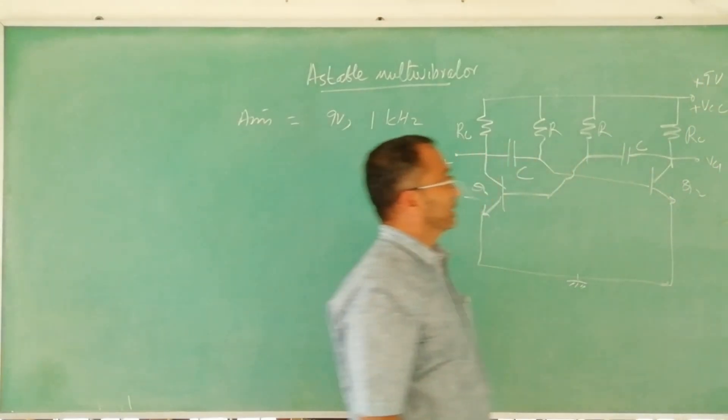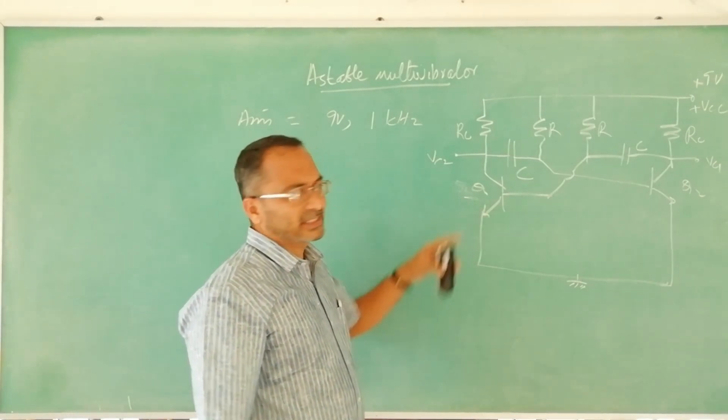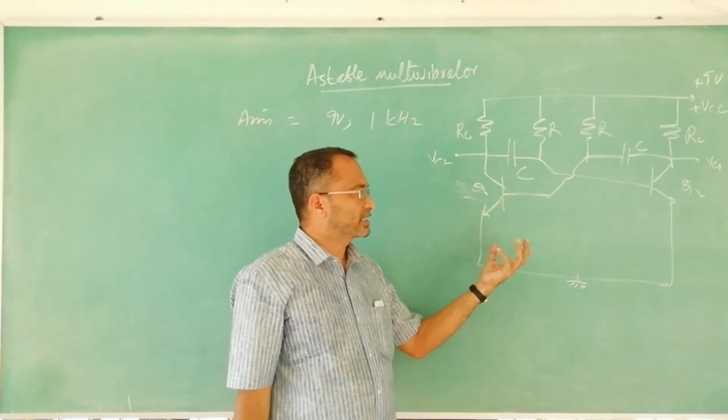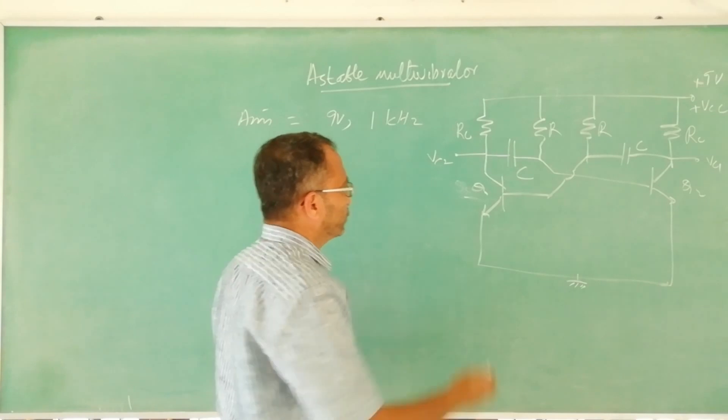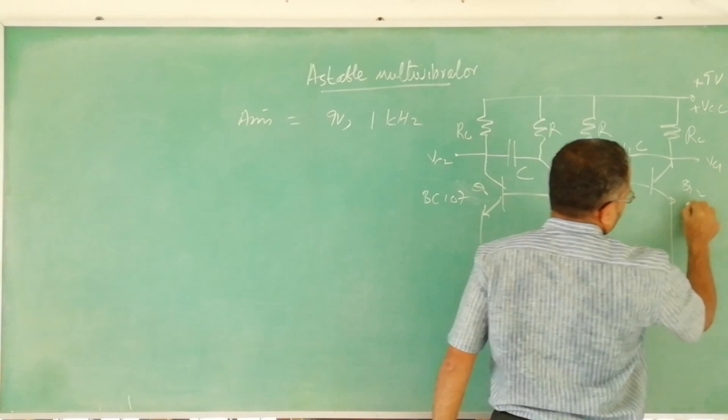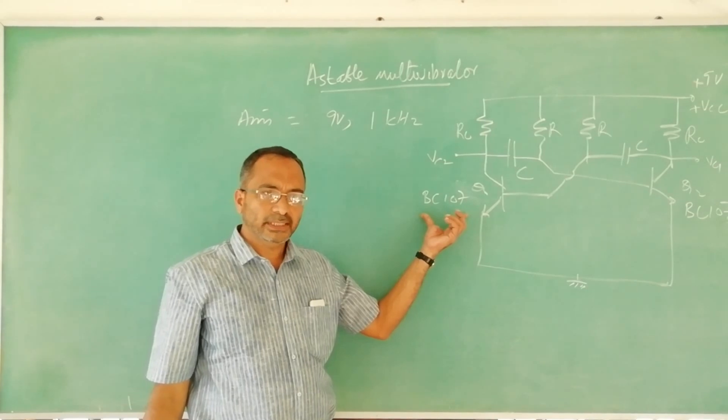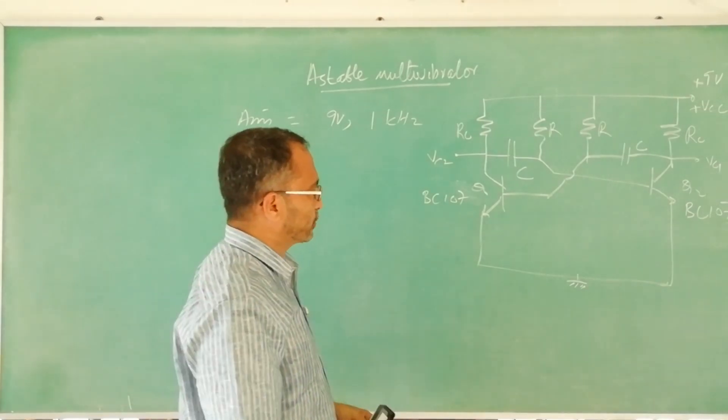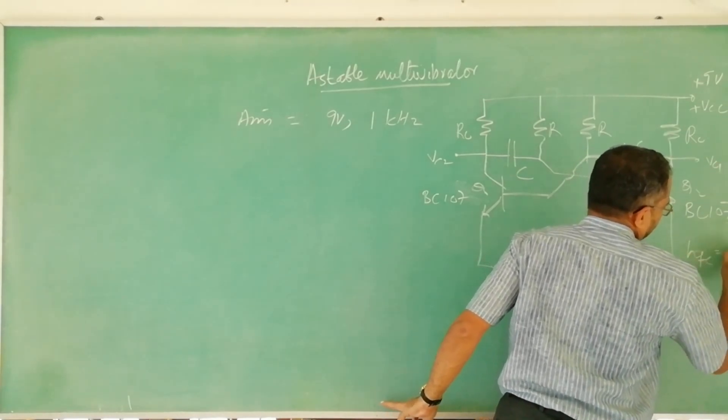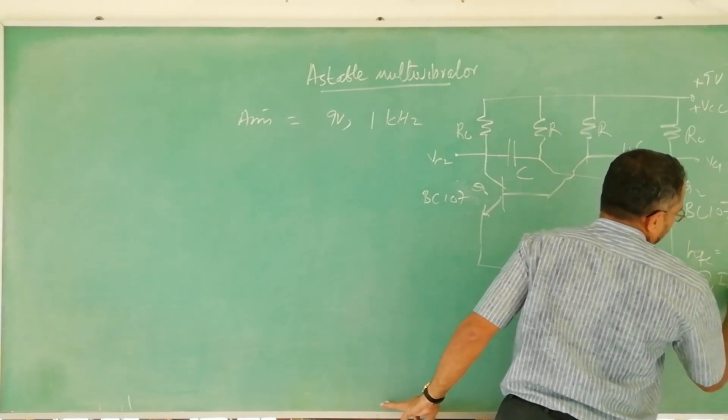Then transistors, we shall select transistors. We can select a low frequency, low power transistor like SL100 or BC107 or A2122. Here let us select BC107, both BC107. Once we selected this we should refer to the data sheet. Data sheet will show you that the hFE minimum is 100 at IC is equal to 2 milliampere.